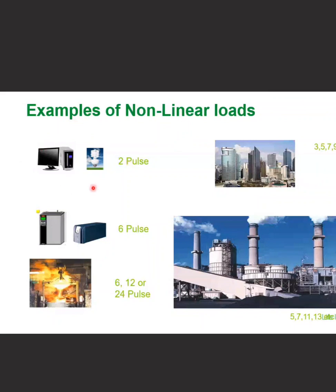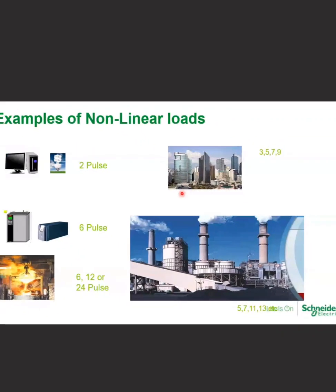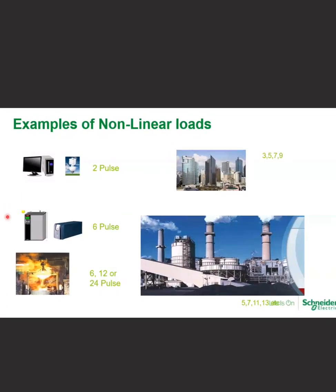Similarly, your VFDs operating on 6-pulse systems — 6 plus or minus 1 — induce 7th or 5th level of harmonics into your system. And furnaces operating on 6 pulses, 12 pulses, and 24 pulses — for example, a 12-pulse furnace — plus or minus 1 means it will induce both 13th and 11th level of harmonics. So the resistive components induce 3rd harmonics, VFDs induce 7th and 5th, and furnaces induce 5th, 7th, 11th, 13th, and so on. A mix of different harmonics is being induced in your system, and the combination makes your system distorted.